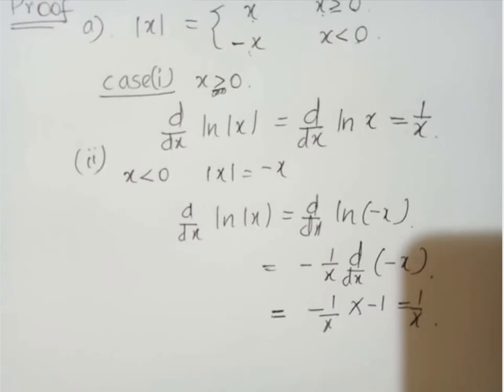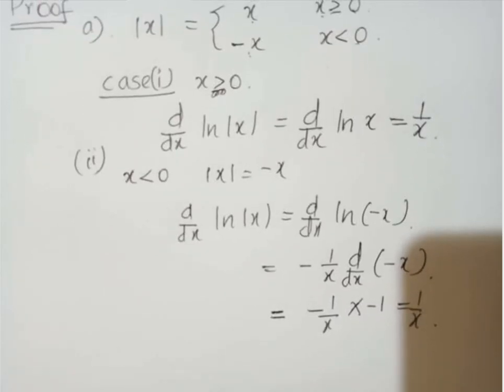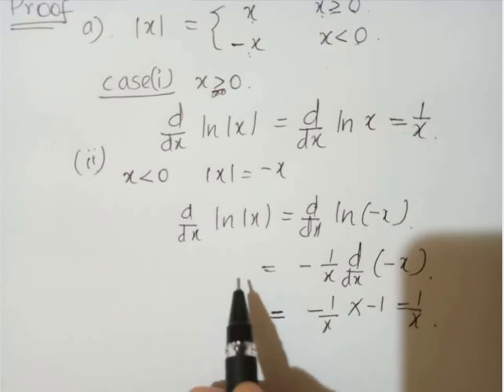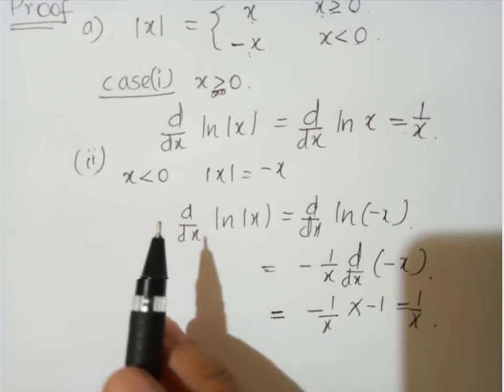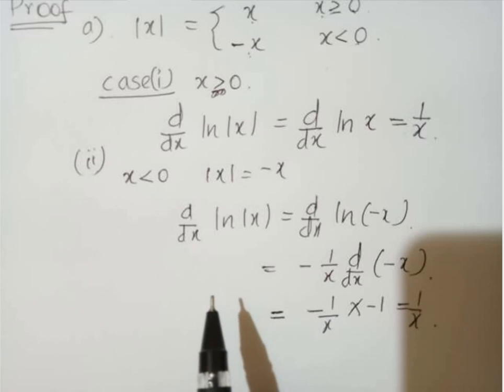Okay? So, in the two cases, derivative of ln |x| is equal to 1 by x.